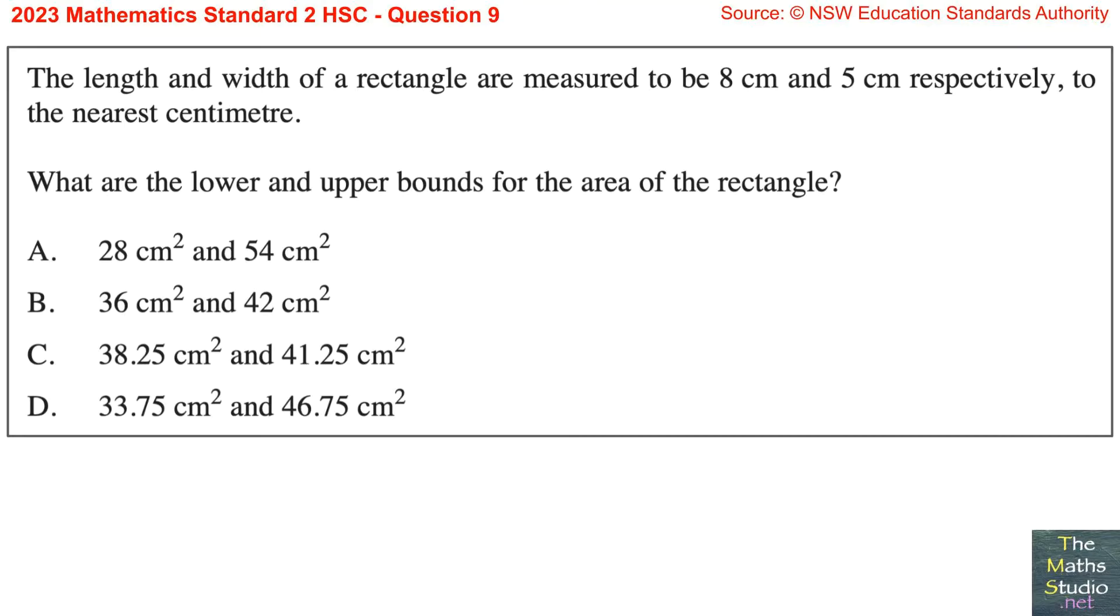Question 9. The length and width of a rectangle are measured to be 8 cm and 5 cm respectively, to the nearest cm. What are the lower and upper bounds for the area of the rectangle?